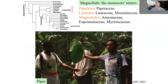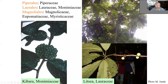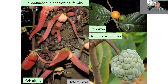Now we move to angiosperms, starting with magnoliids. Magnoliids have three important orders: Piperales with Piperaceae, Laurales with Lauraceae, and then Magnoliales. This is how Piper looks. Then Monimiaceae with Kibara, Lauraceae with Litsea, and Annonaceae — you probably know Annona as a fruit, but there are also other forest trees.